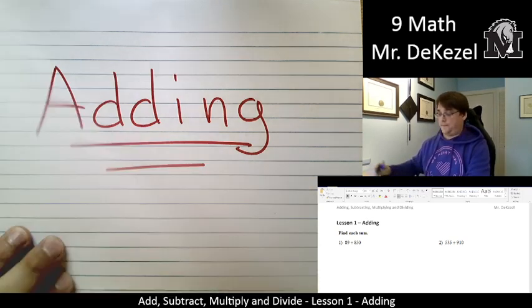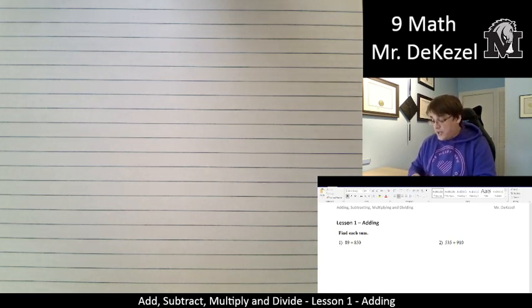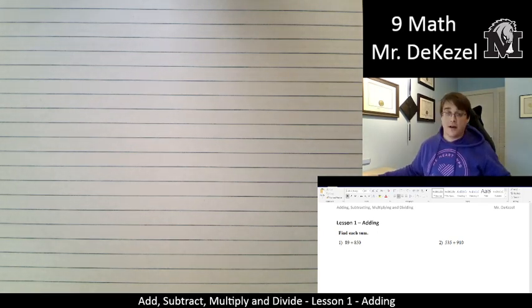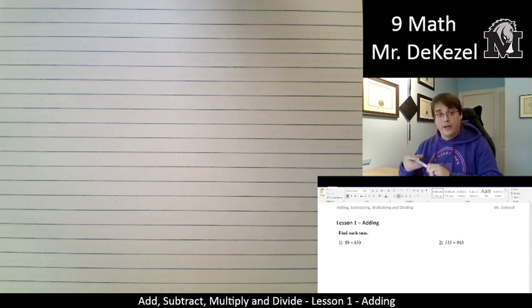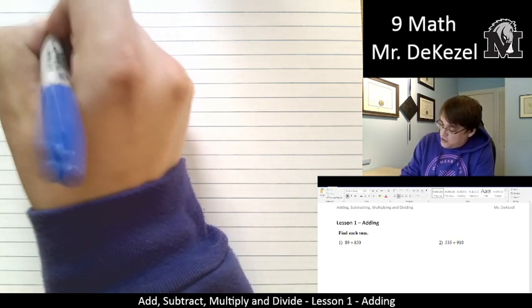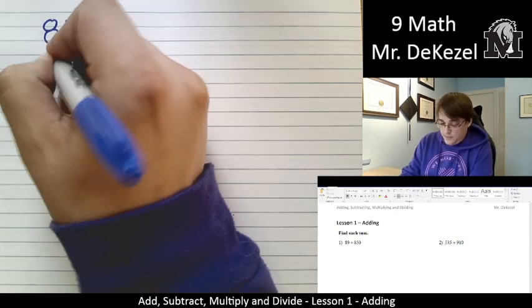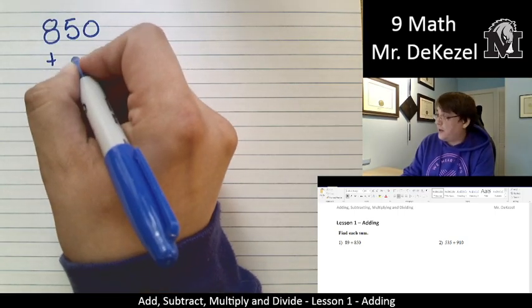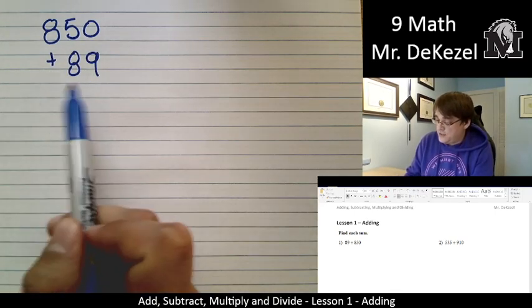You have the booklet, you can see the questions. The first question is to find the sum of 89 and 850. Let's use blue. This is all about adding. I always put the larger number on top and the smaller number on the bottom. The bottom one is two digits, the top one has three, so I put them on top of each other.